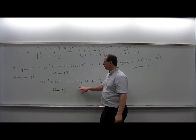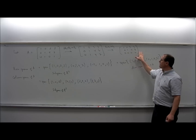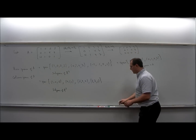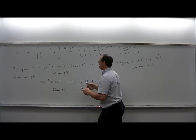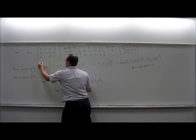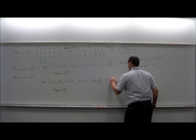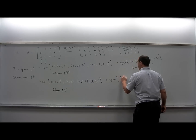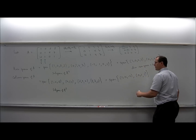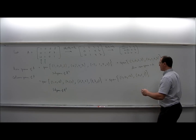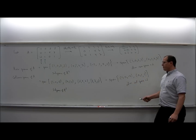For the column space, since we did row operations we shouldn't rely on the columns of the reduced matrix. Instead, the leading ones in the row echelon form act as pointers to the linearly independent columns of the original matrix. The first and second columns were independent, so the span of all four columns equals the span of just the first and second columns. The dimension of the column space is 2 — a two-dimensional subspace of R3.